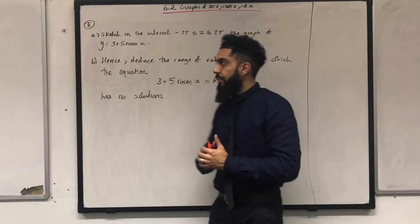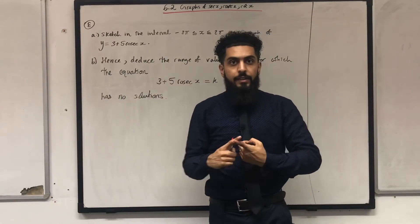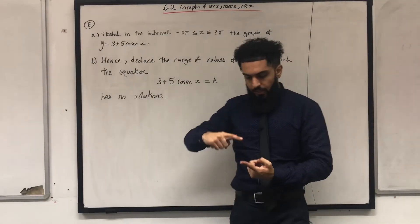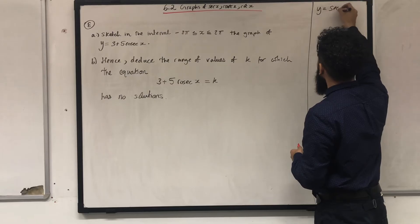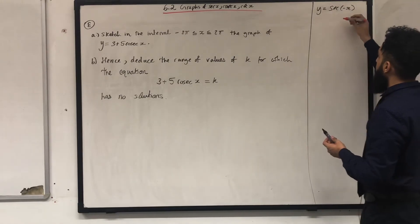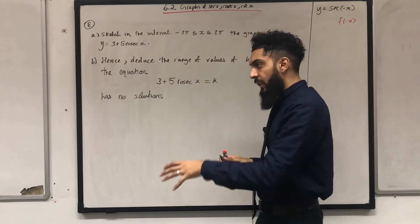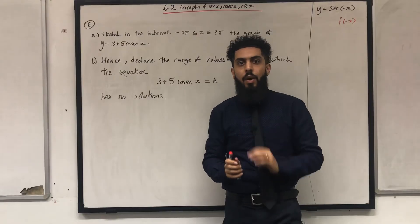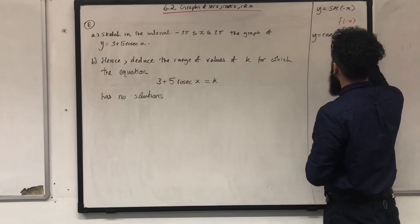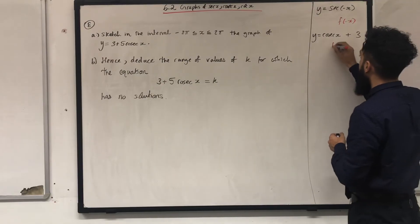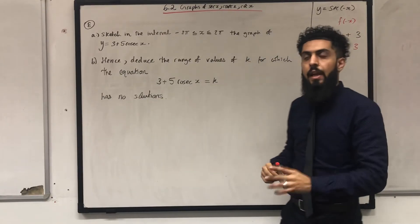Here is a past exam question, but first an important point: you could be asked to apply a sequence of transformations to the sec, cosec, or cot graph. For example, you could be asked to sketch y = sec(-x) — that's f(-x) — so you take y = sec x and reflect it in the y-axis. Or sketch y = cosec x + 3, which is f(x) + 3, so you shift y = cosec x three units upwards.